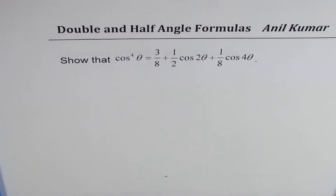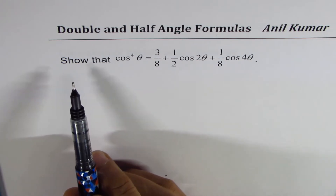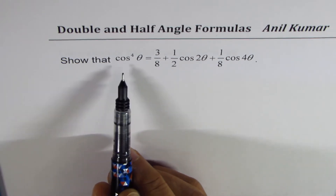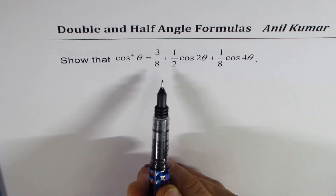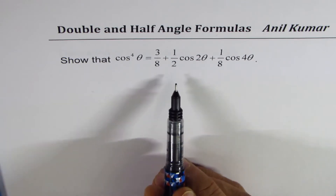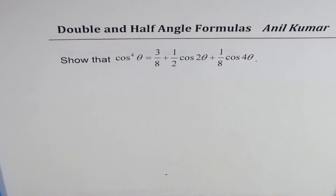I'm Anil Kumar sharing with you a test question on relating powers of cosine with double angle. The question is: show that cos to the power of 4 theta equals 3 over 8 plus half of cos 2 theta plus 1 over 8 cos 4 theta.